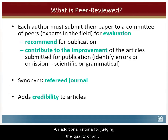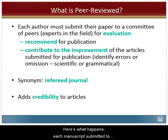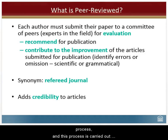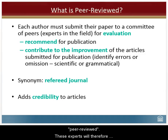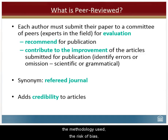An additional criteria for judging the quality of an information source is whether the source is peer reviewed. Each manuscript submitted to a scientific journal must go through an evaluation process, and this process is carried out by experts in the field — hence the expression peer reviewed. These experts evaluate the quality of the manuscript, the metadata used, the risk of bias, etc. A scientific article that has been peer reviewed is therefore of better quality.